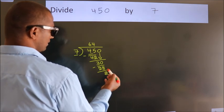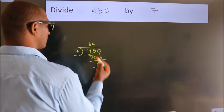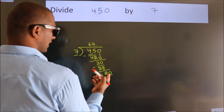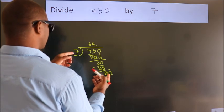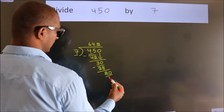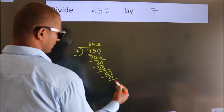After this, no more numbers to bring down. So what we do is, we put a dot, take 0. So, 20. A number close to 20 in the 7 table is 7×2=14. Now we subtract. We get 6.